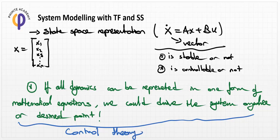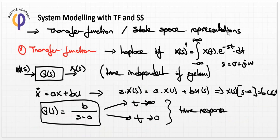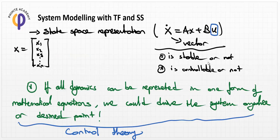If we have a system in the form of a transfer function or state-space representation, we can control it by using the input variable given from outside. If we select the proper input variable, we can drive the system to any desired point. This is the control theory application in mechatronics, using transfer function and state-space modeling techniques to create a common mathematical form independent of time.